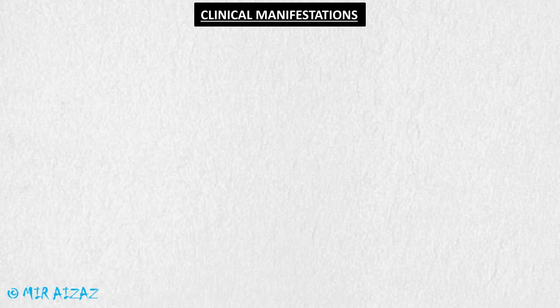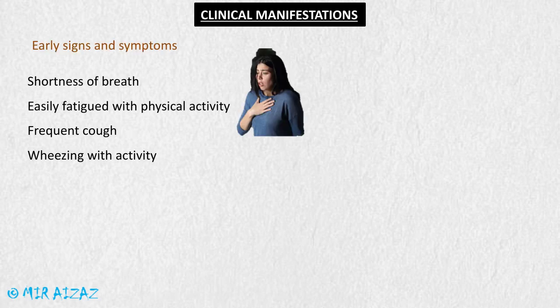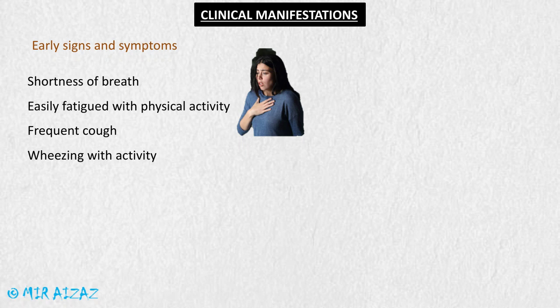The clinical manifestations of asthma include early and late signs and symptoms. Early signs include shortness of breath because inflammation in the airways is increasing, fatigue with physical activity because not enough oxygen is getting into the airways, and frequent coughing and wheezing with activity due to excess mucus production.